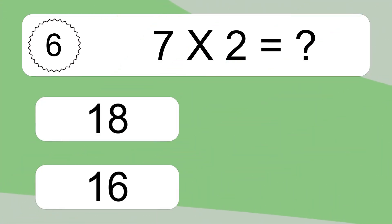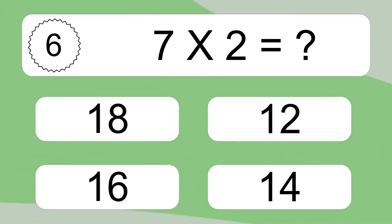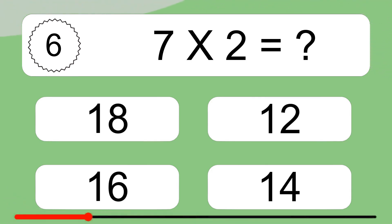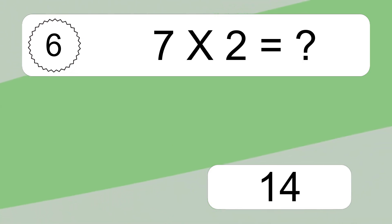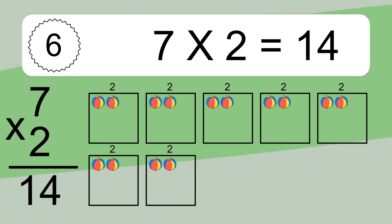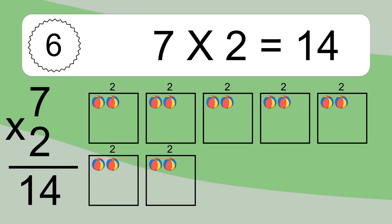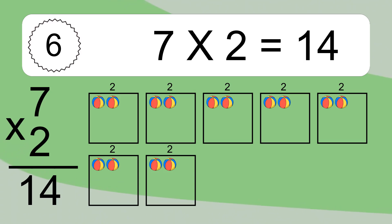7 times 2 equals what? 7 times 2 equals 14. We have 7 boxes, and each box has 2 colorful balls inside. If you count all the balls in all the boxes together, you will have 7 times 2 balls. This equals 14 balls.